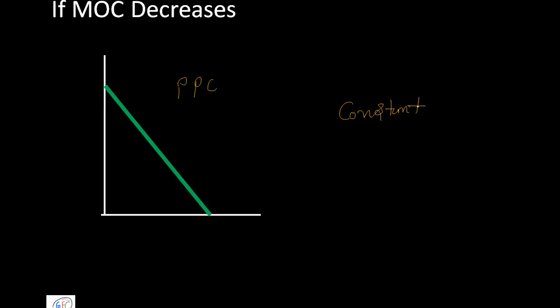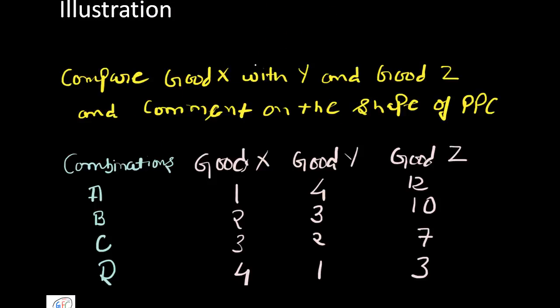So if your MOC has to be constant, then your PPC would be a straight line which would of course be falling. This is not decreases, this is constant. Please mind that if MOC is constant, then your PPC is a straight line.